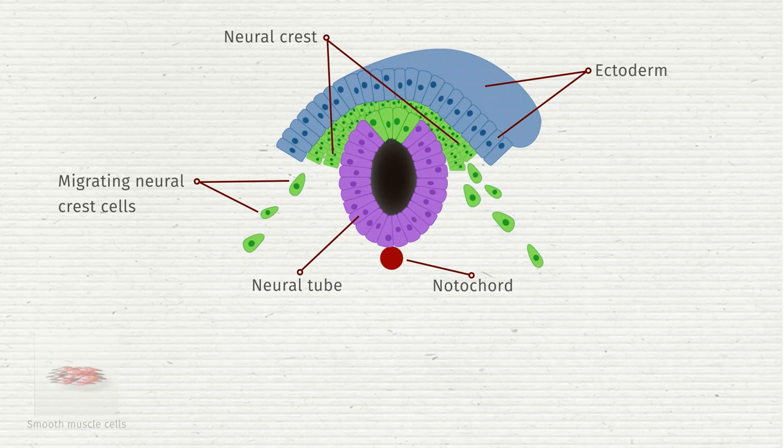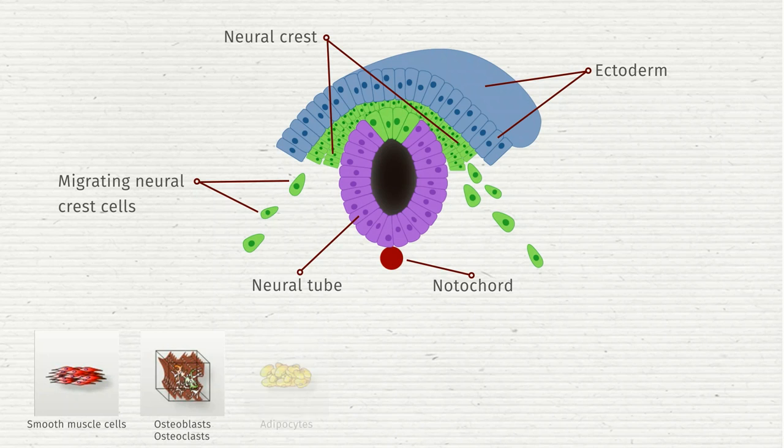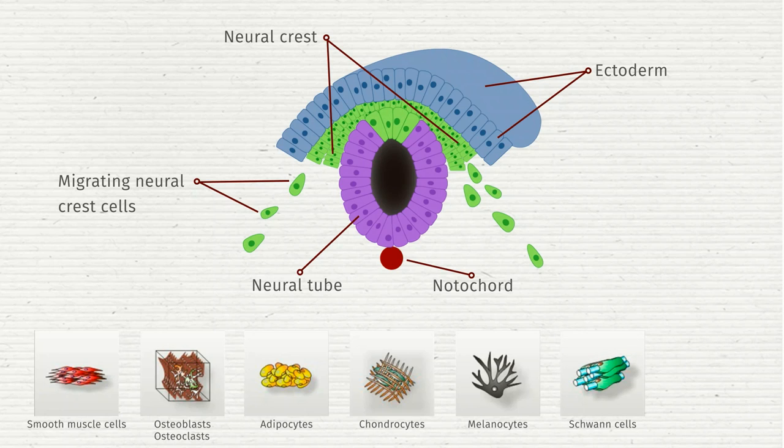These derivatives include smooth muscle cells, osteoblasts, adipocytes, chondrocytes, melanocytes, glia of the peripheral nervous system, and neurons.